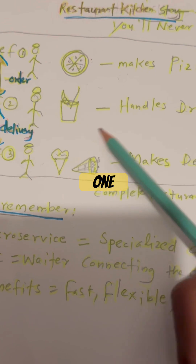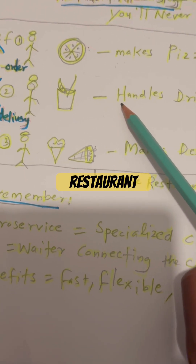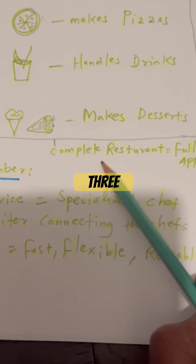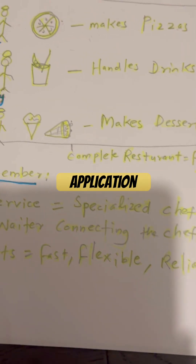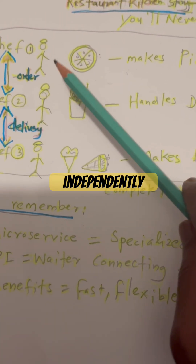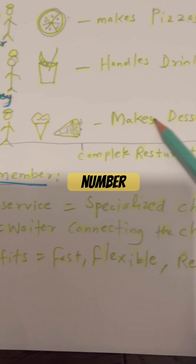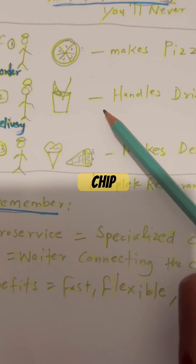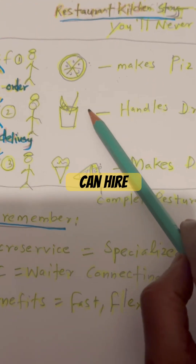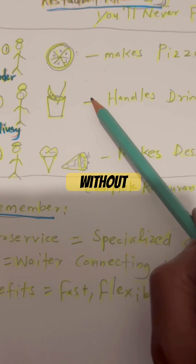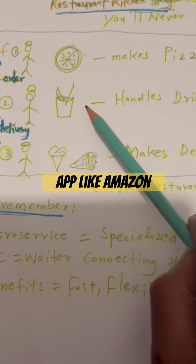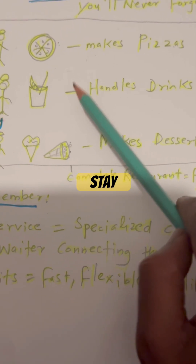Each chef does one thing, but together they run the full restaurant efficiently — this is our complete restaurant, our full application. The best part: each chef works independently. If the dessert chef is busy, the pizza chef still cooks your pizza. You can hire, train, or replace a chef without closing the restaurant, because they work independently. Big apps like Amazon or Netflix use this system to stay fast and reliable.